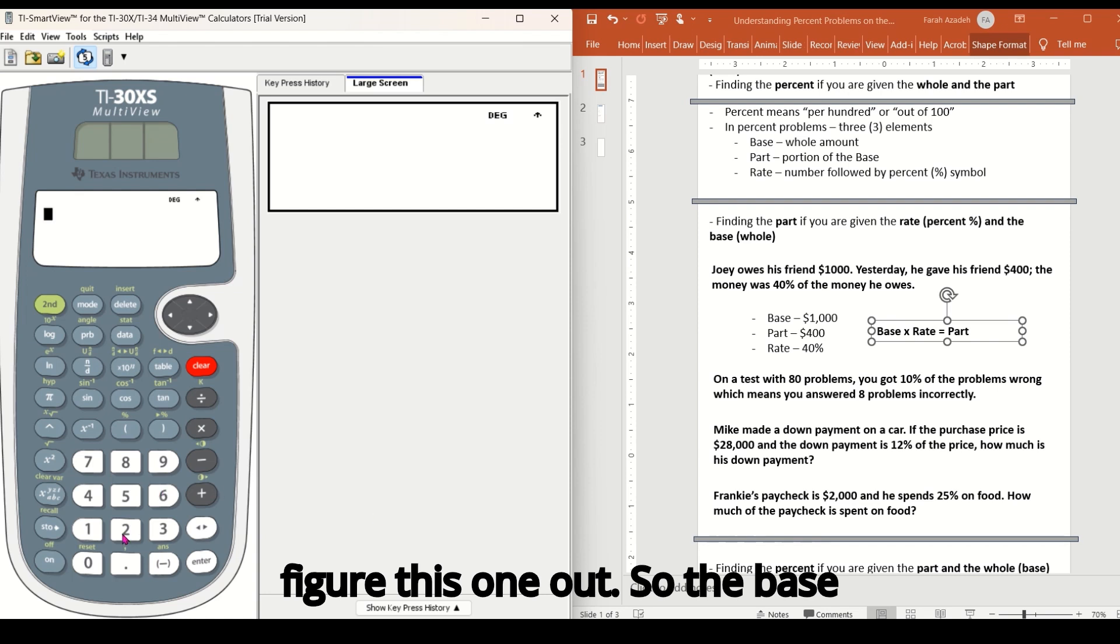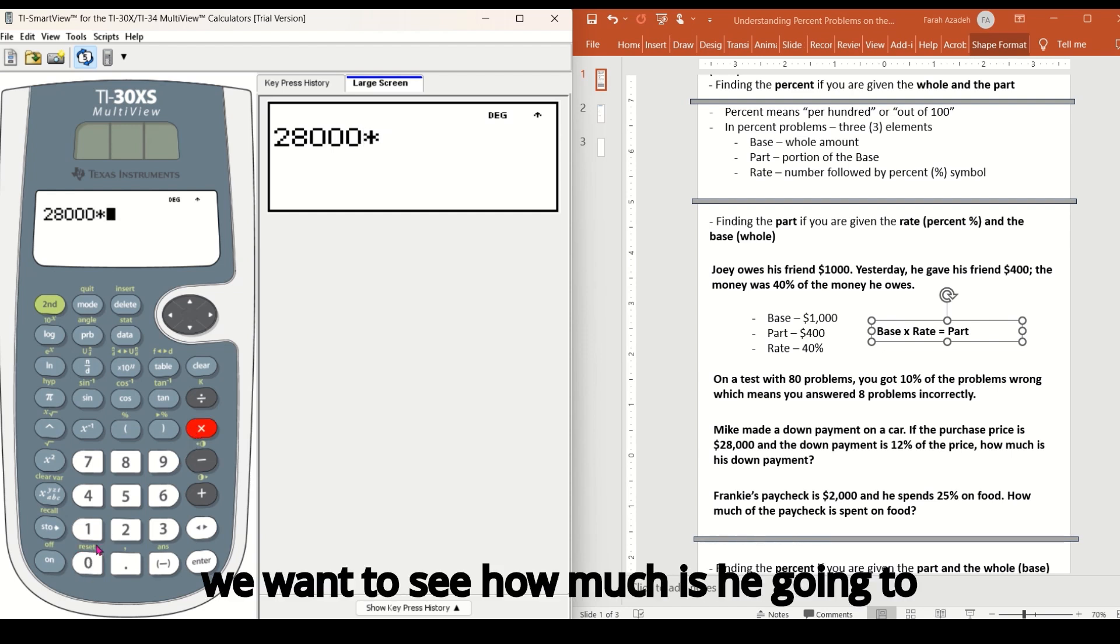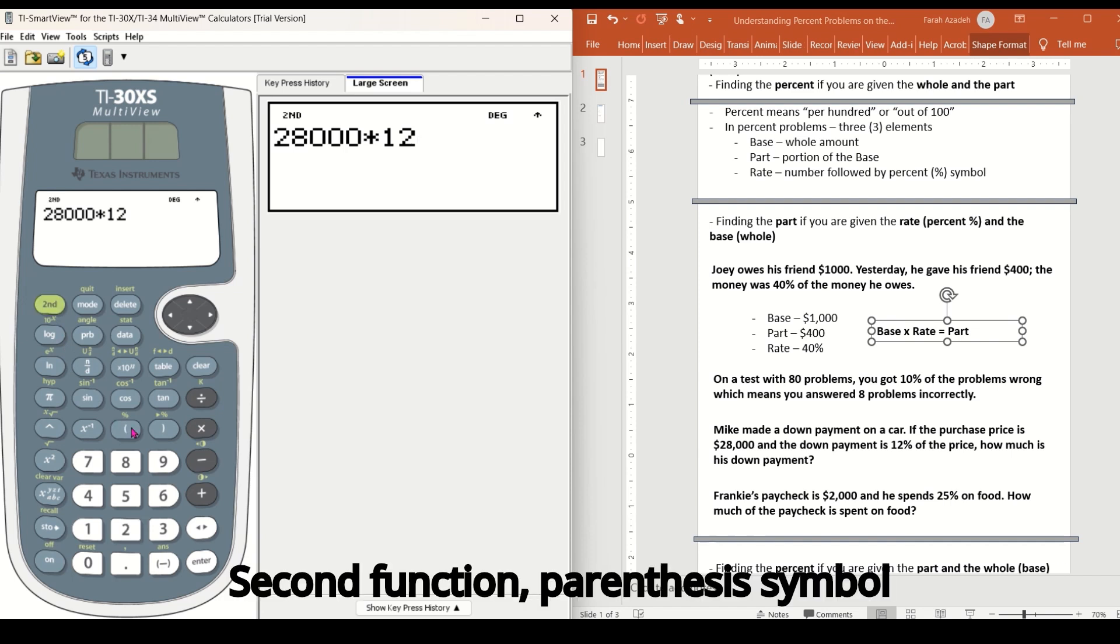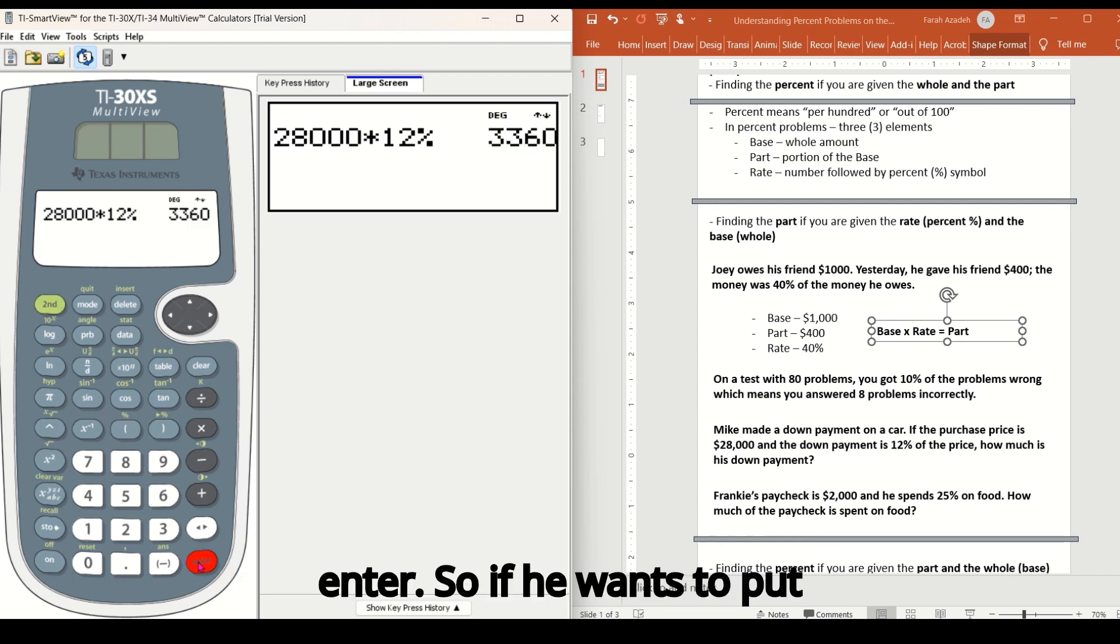So the base is $28,000 times 12% because we want to see how much is he going to put down as a down payment. So 12 second function parentheses symbol enter. So if he wants to put down 12% of the total price of the car, he's going to be putting down $3,360.